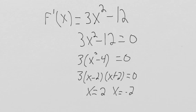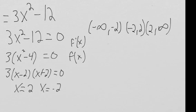Now we know where the function is flat, and we could reason which is a max or min, but I want you to get used to this table format for proving whether it's a max or min by comparing the derivative and the function. So I'm setting up a table with intervals: negative infinity to -2, then -2 to 2, then 2 to infinity. This table format may look familiar from unit 2.